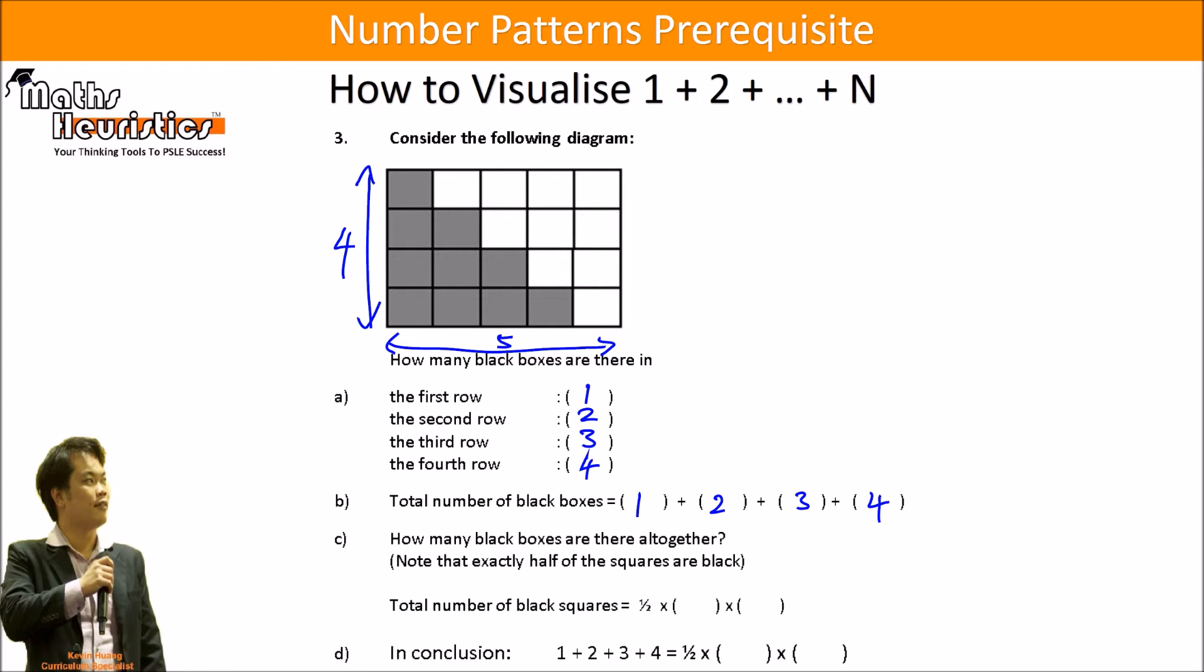Now since half of this rectangle is shaded, the total number of black squares can be said to be half times 4 times 5. So we can conclude that 1 plus 2 plus 3 plus 4 is equal to half times 4 times 5.